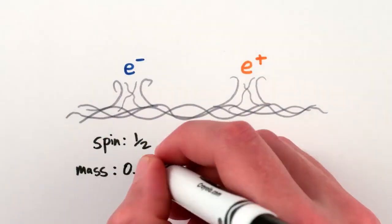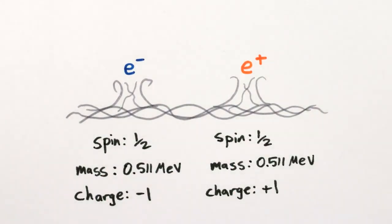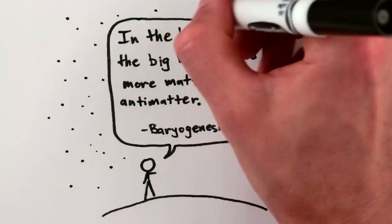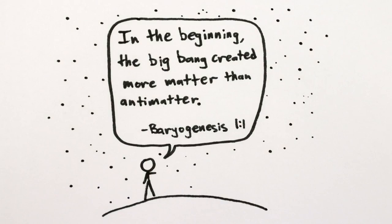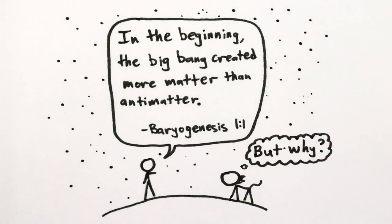If matter and antimatter are basically identical mirror images of one another, why did the Big Bang produce so much more matter than antimatter? No one knows, but to physicists, the answer matters.